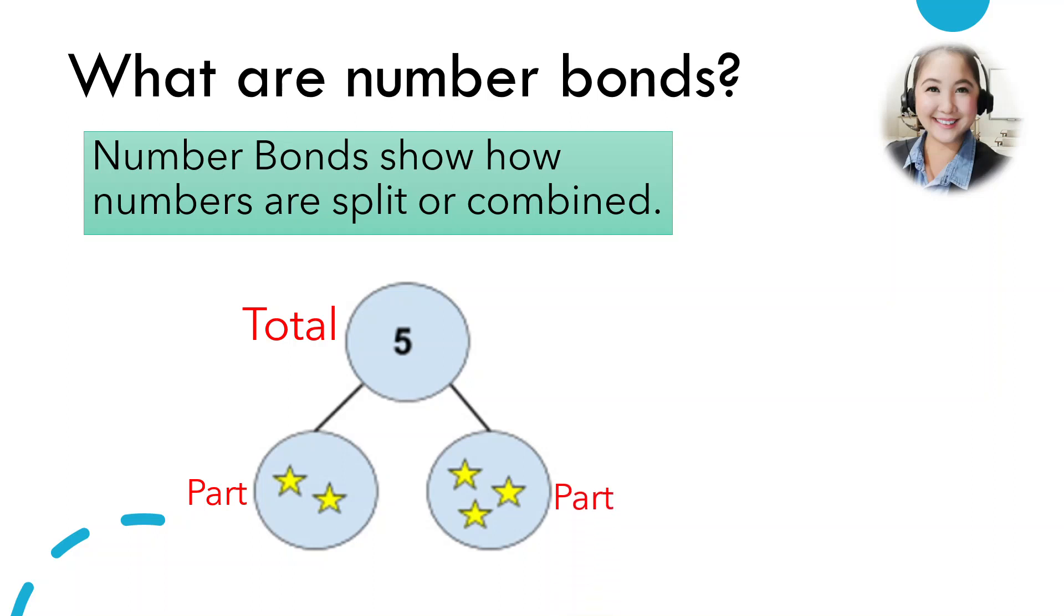Two is one part and then three is another part. So if we put together two and three, it makes five. Now, can you think of another pairs of numbers that make five?